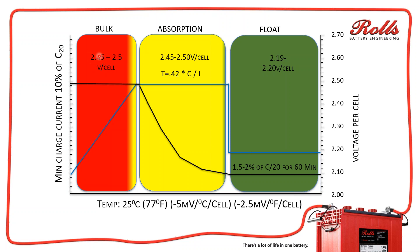Bulk: generally 2.45 to 2.5 volts per cell. Absorption: 2.45 to 2.5 volts per cell. And float: typically 2.19 to 2.2 volts per cell. On a system with an undersized PV array, I'm probably going to bump my float voltage up to 2.25 volts per cell, maybe even 2.3, to try to keep that array pumping as much voltage and current as possible to get the batteries charged.